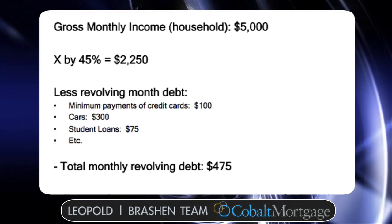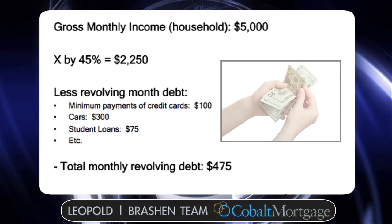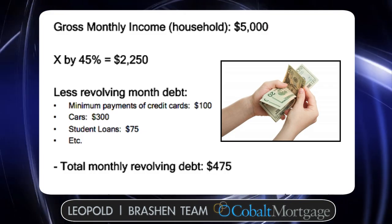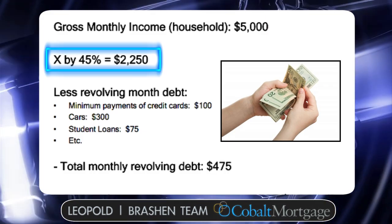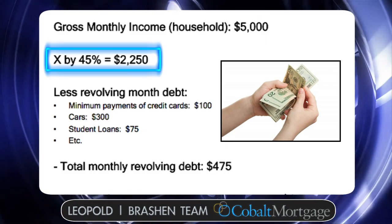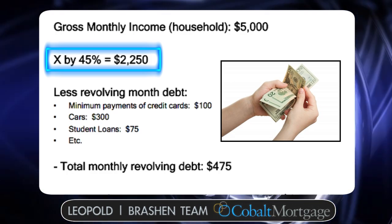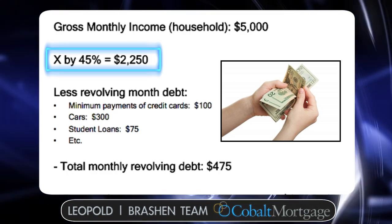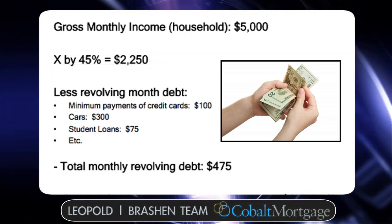Lenders max — they'll allow to go towards debt in any given month is about 45%. So you can see that leaves us with about $2,250, so $2,250 left over that can go towards a total debt payment.